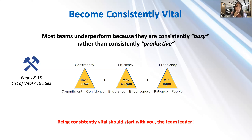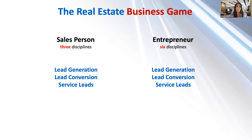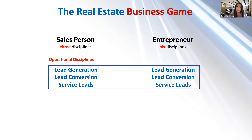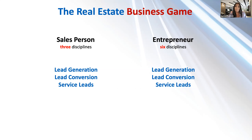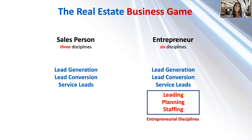We already saw these three disciplines: lead generation, lead conversion, and servicing leads — the same for both sales and entrepreneurship. We consider those operational disciplines. What we're going to add when it comes to the business game is leading, planning, and staffing to complete the six disciplines. We consider those entrepreneurial disciplines. We want you to shift that perspective and add these three on top.